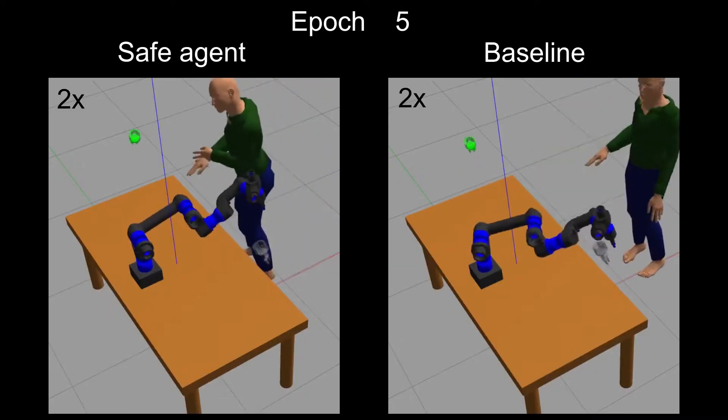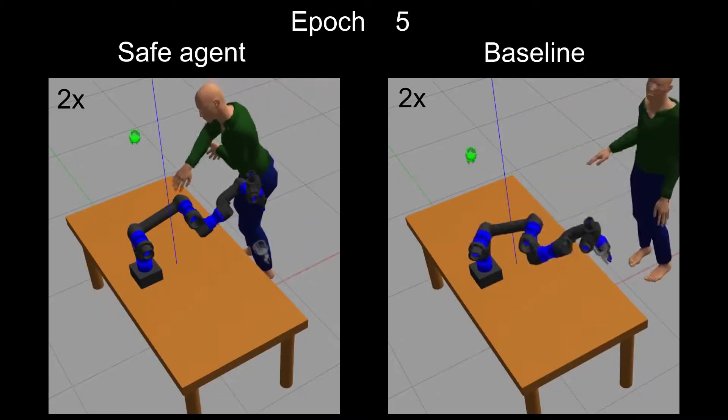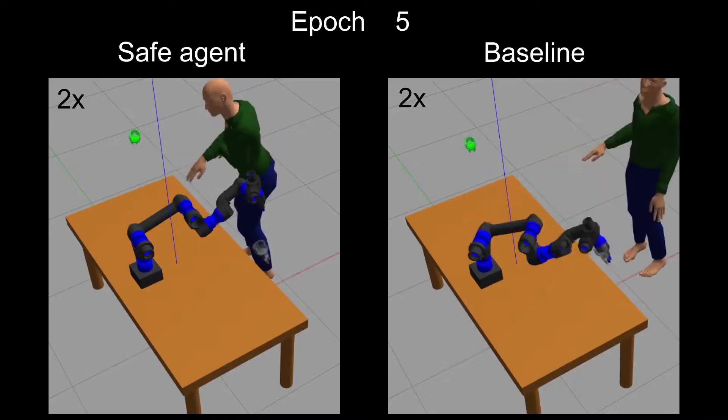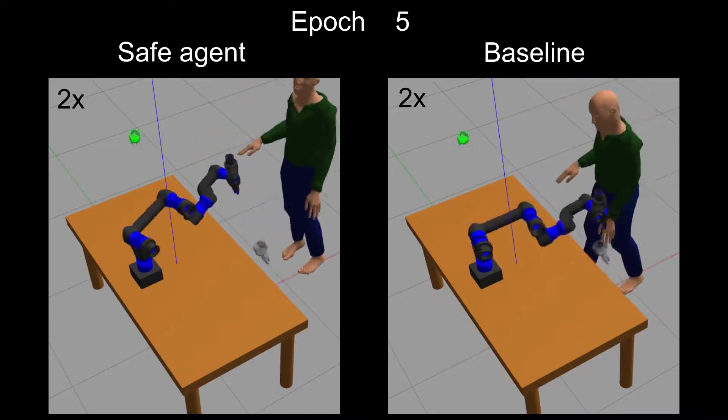After five epochs, both agents learn to move to the left. The baseline agent repeatedly crashes into the human while the safe agent stops before the collision.